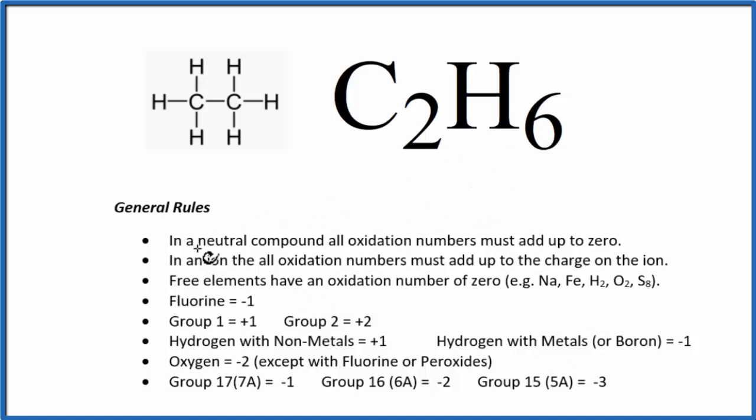So ethane is a neutral compound, and all of its oxidation numbers will add up to zero. It's neutral, we don't see a plus or minus out here, like we would with an ion.